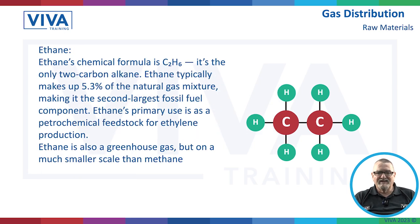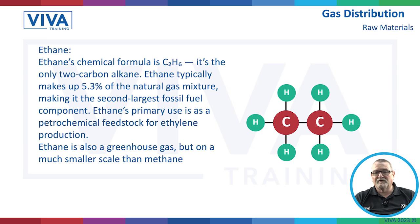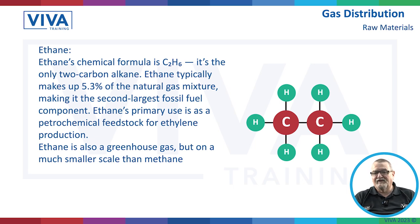One of the other components is ethane — that's C2H6, so two carbons and six hydrogens. It's the only two-carbon alkane, and it's typically made up of 5.3% of natural gas, making it the second largest fossil fuel component. Ethane's primary use is as a petrochemical feedstock for ethylene production. It's also a greenhouse gas, but on a much smaller scale than methane.